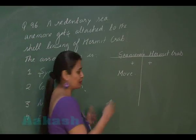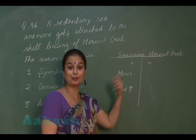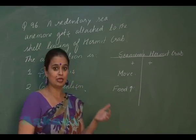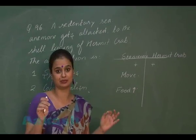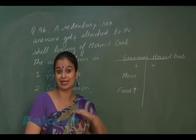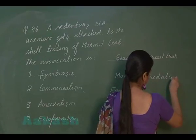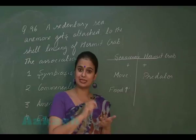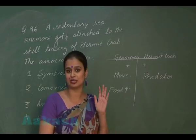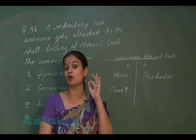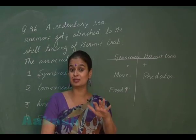For the hermit crab, the sea anemone possesses tentacles with toxic chemicals, so the hermit crab is protected from attack by predators due to this association. Between the sea anemone and hermit crab there is a positive-positive relationship, but this relationship is not obligatory — it is not compulsory.